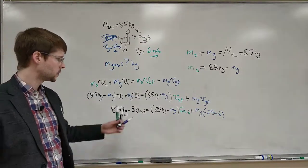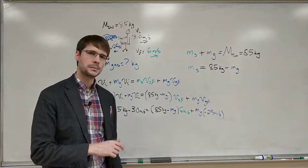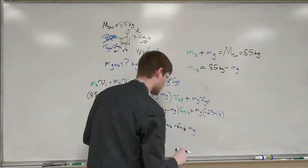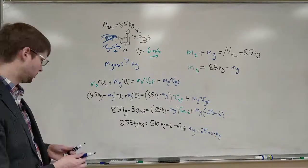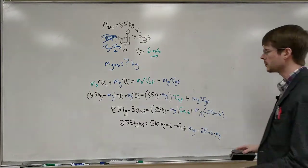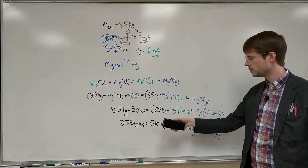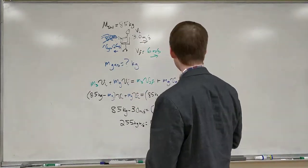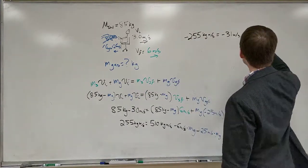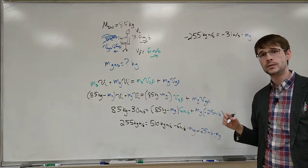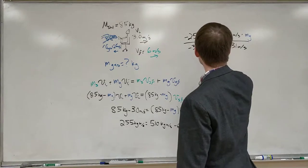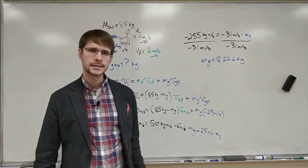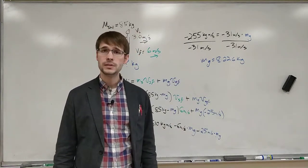Now that we've got everything plugged in, we're going to have to distribute a little bit and combine like terms. We don't need this anymore now that we've combined, we've sort of already plugged it in. So we are going to finish up combining like terms and then solve for the mass of the gas. Here we go. Dividing both sides by 31 meters per second.